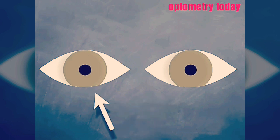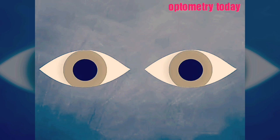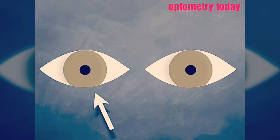Here, the left side is affected. You will miss an RAPD if you do not do the swinging light test, as it is only by comparing the relative strengths of the signals reaching the brain from the eyes that the abnormality is detected.